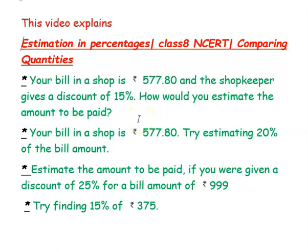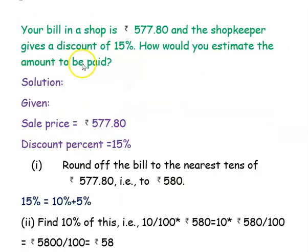Hi, we are from At Home Tuition. In this video we are going to see how to estimate the discount percentages and the discount amount using a few examples. The first example is: your bill in a shop is rupees 577.80.